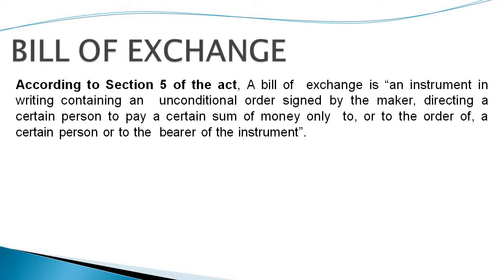Bills of exchange, according to Section 5 of the Negotiable Instruments Act of 1881, is an instrument in writing containing an unconditional order signed by the maker directing a certain person to pay a certain sum of money only to, or to the order of, a certain person or to the bearer of the instrument. In a promissory note, it was an unconditional undertaking or promise made by the maker — the customer making a promise. Here in bills of exchange, the maker is the seller who is ordering the customer to pay a certain sum of money.